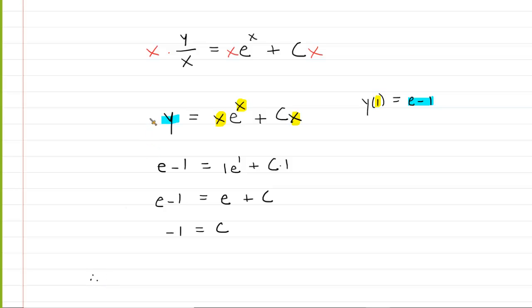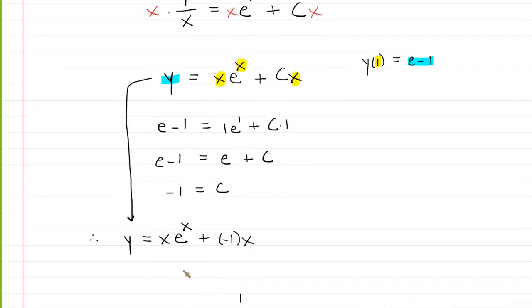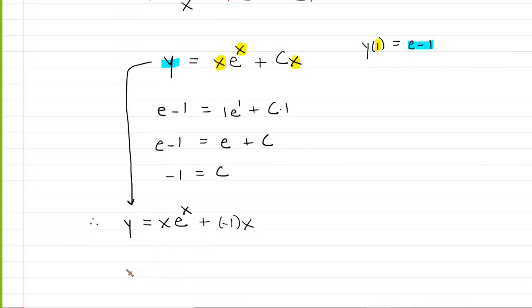And therefore, your final answer will be y equals x times e to the x plus c. So it's going to be plus a negative 1 multiplied by x. We can simplify that to just y equals x e to the x minus x. That is the correct answer to the question.